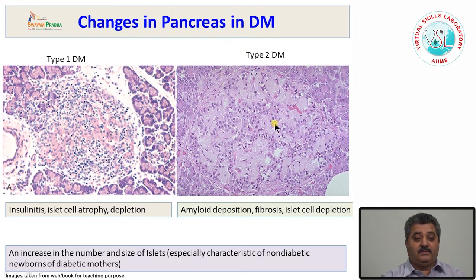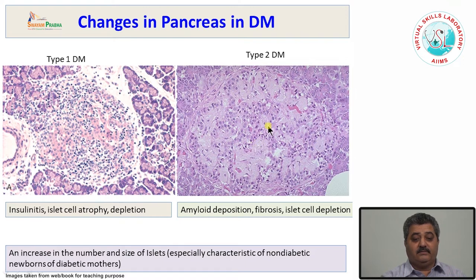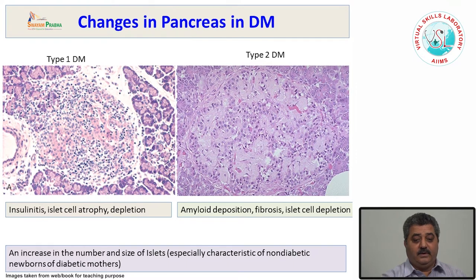In type 2 diabetes mellitus, the number of islet cells may be increased initially but later decreases. More characteristic is the deposition of amyloid material in the islets, causing atrophy of these cells. The causal relationship is not well known, but the amyloid deposition probably causes atrophy of islet cells.